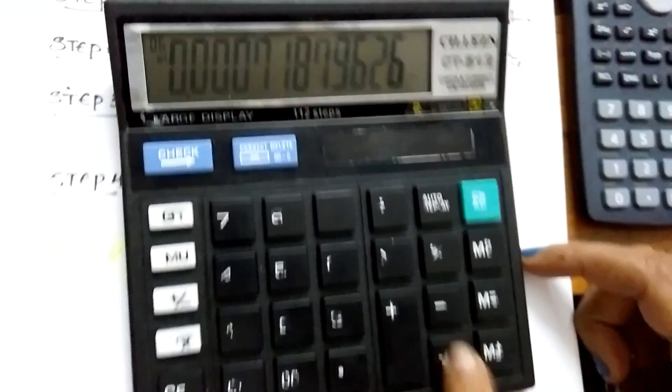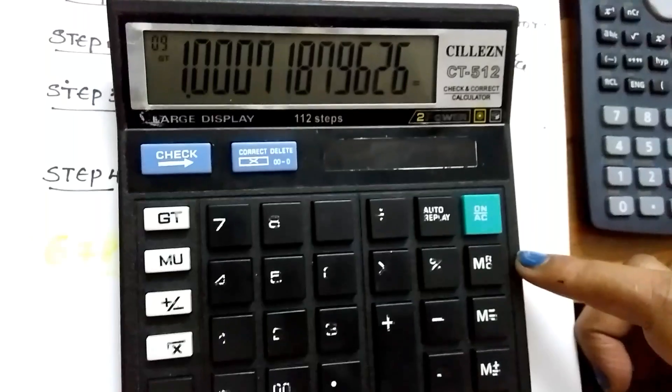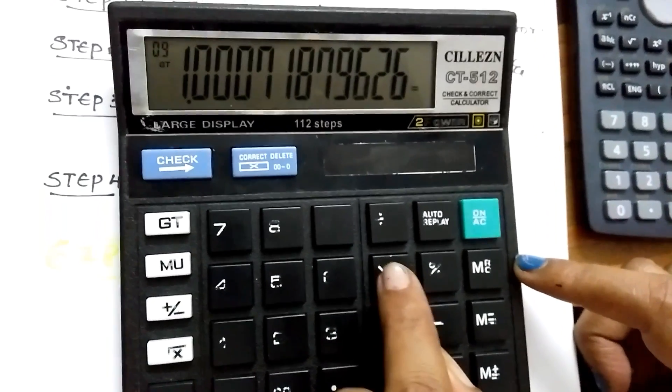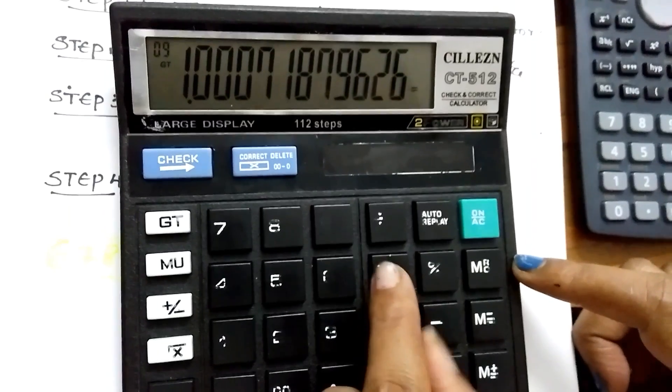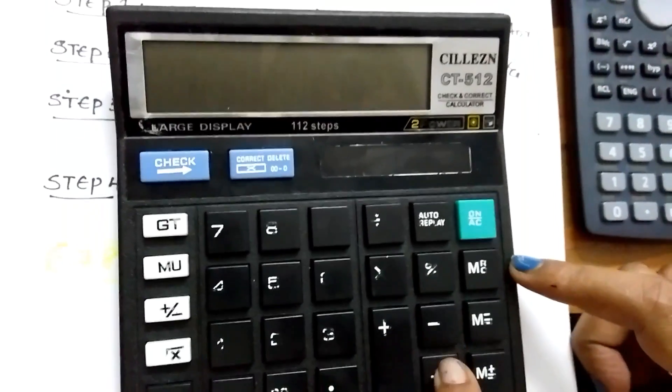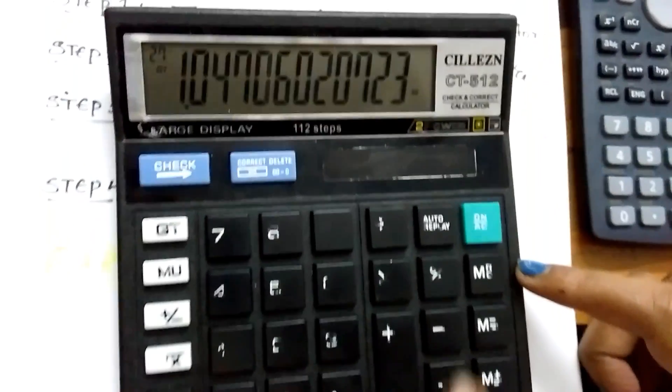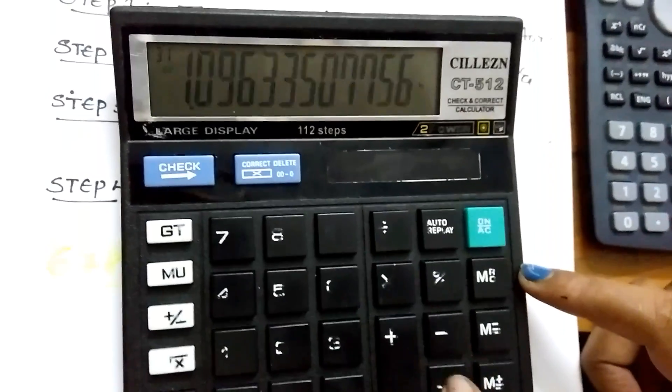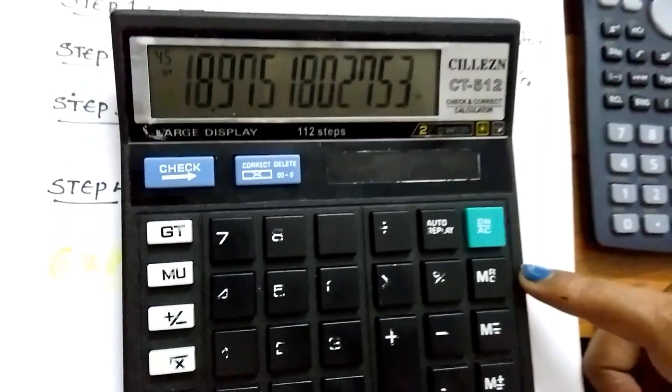Then step 3: Divide with 3 because we are going to find cube root, and add 1 to that number. Step 4: Press multiply and equal to button for 12 times: 1, 2, 3, 4, 5, 6, 7, 8, 9, 10, 11, 12.